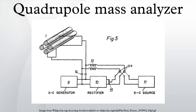The quadrupole mass analyzer is one type of mass analyzer used in mass spectrometry. It is also known as a transmission quadrupole mass spectrometer, quadrupole mass filter, or quadrupole mass spectrometer.